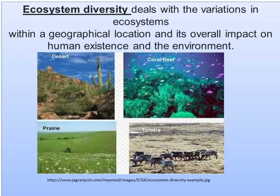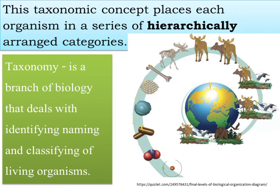Ecosystem diversity deals with the variations in ecosystems within a geographical location and its overall impact on human existence and the environment. Taxonomy is a branch of biology that deals with identifying, naming, and classifying living organisms, placing each organism in a series of hierarchically arranged categories.